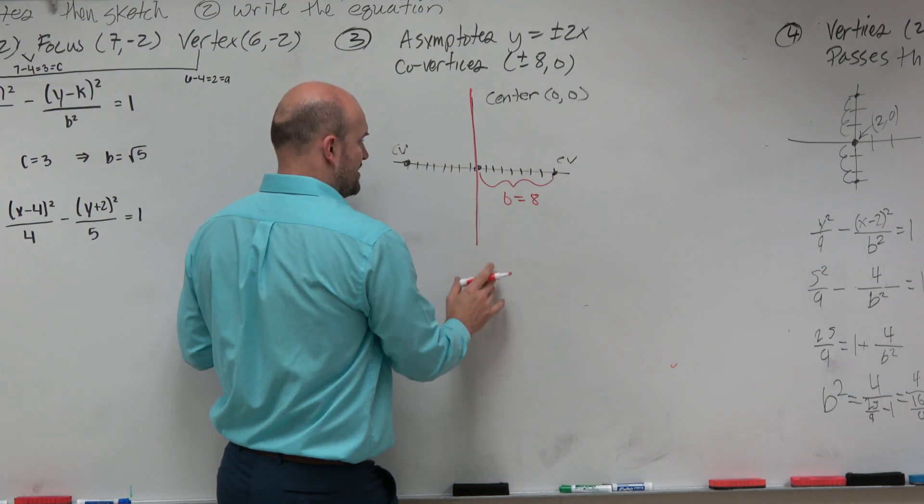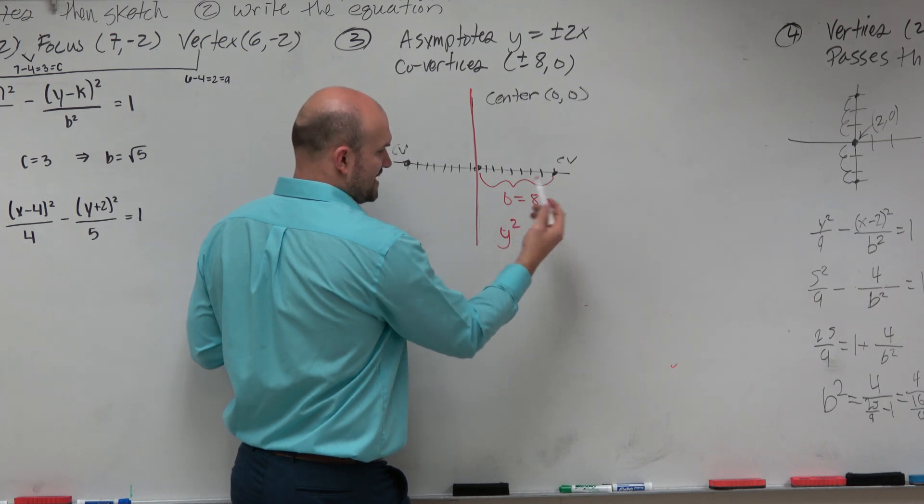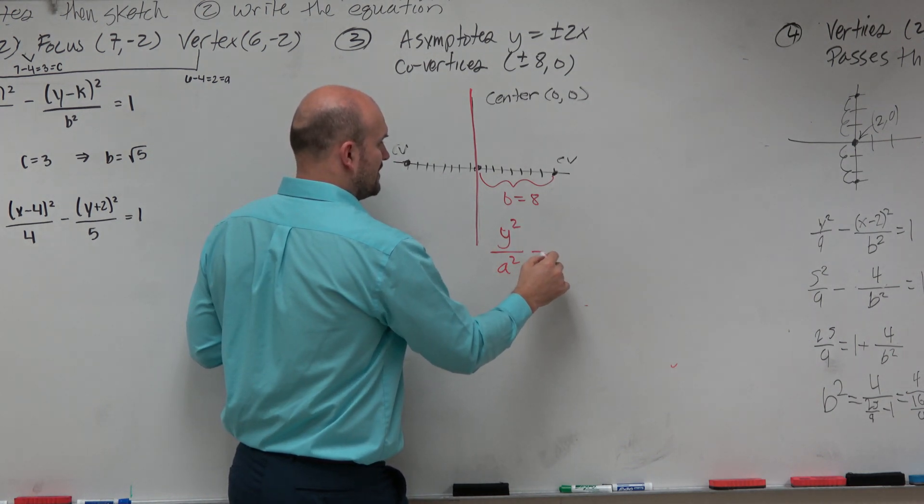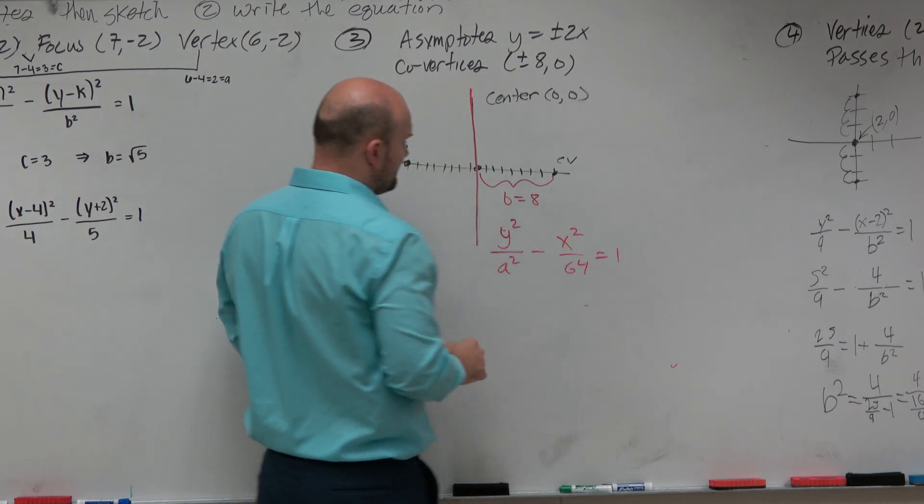So let's go and write in the information that we have here, at least so far. So we know we have y squared minus 0 over a squared, which we don't know right now, and that's going to be minus x squared over 64. So we've got to figure out a squared.